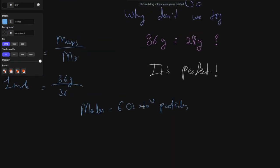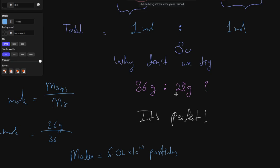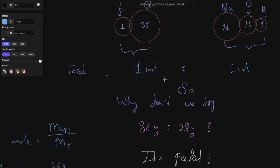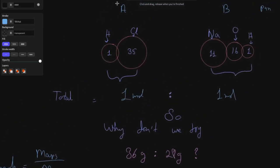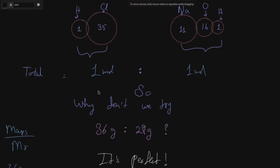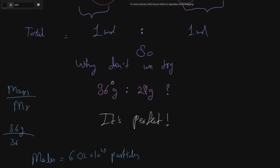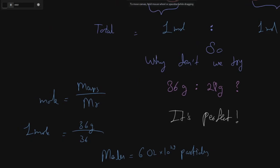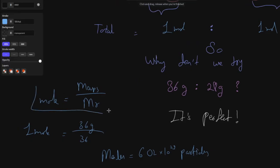We will be using moles in a lot more detail in the next couple of videos, where I will be doing some questions on moles and showing how easy it is with this formula. This formula — n = mass / Mr — is the biggest and most important formula of this chapter, and it will support you in the upcoming questions. Inshallah, see you in the next class. Hope you enjoyed the video — please share it and like as well.